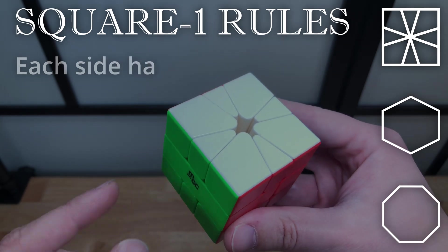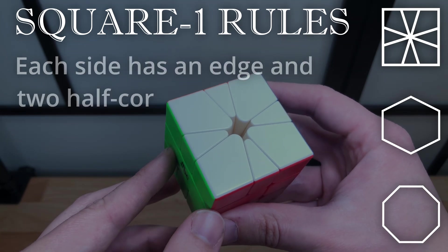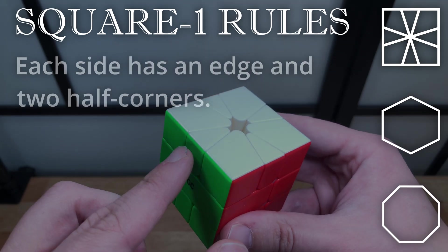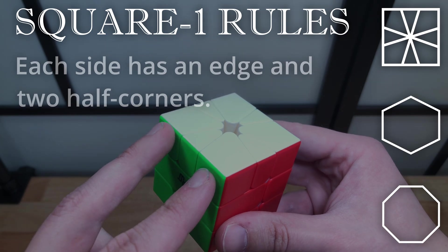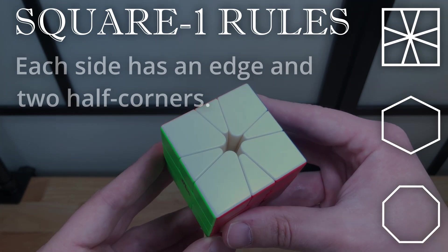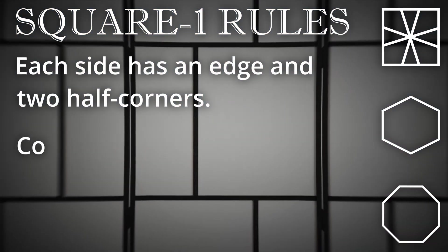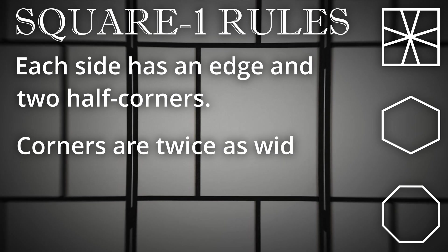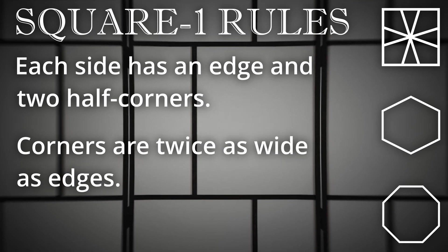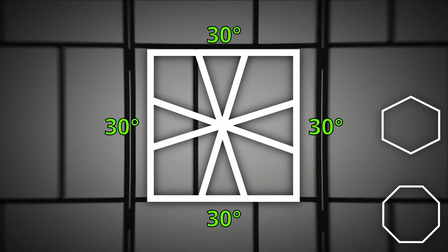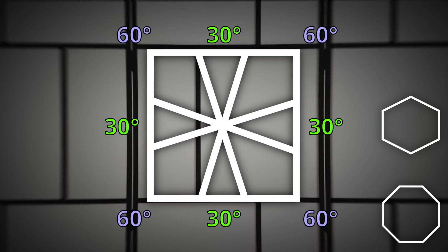The first rule of the Square-1 is that every side of the polygon has an edge contained within the side, and two halves of corners each of which spans two sides. The second rule is that the corners are exactly twice as wide as edges on the circular surface that the pieces rotate around. With a square, edges take up 30 degrees each and corners take up 60 degrees each.